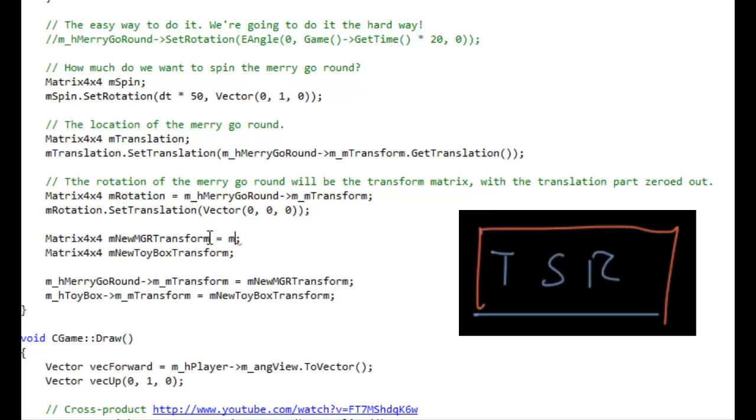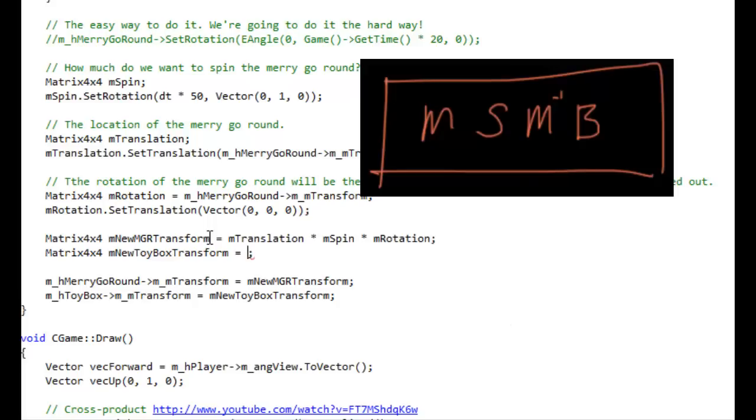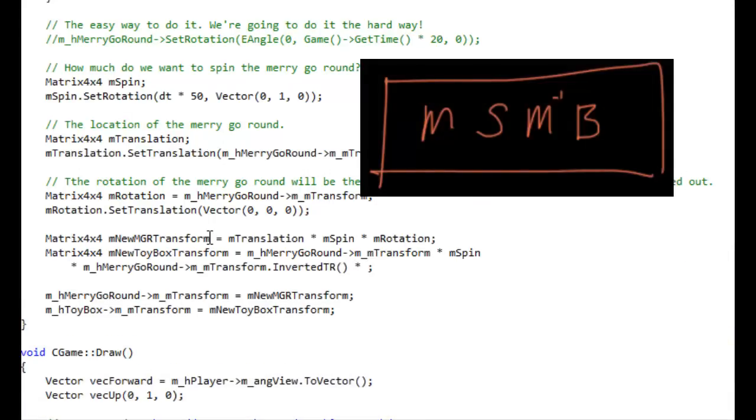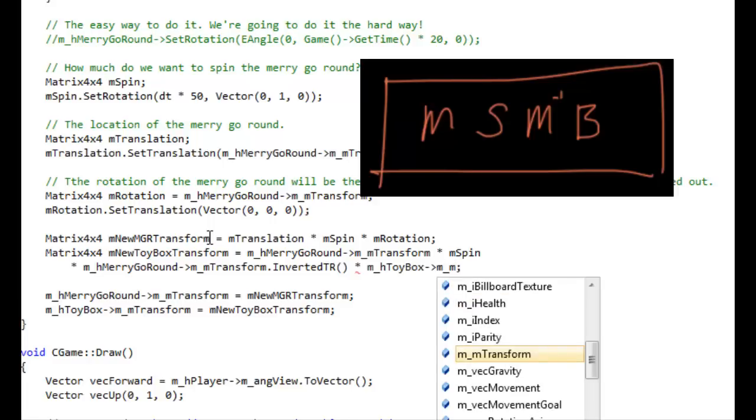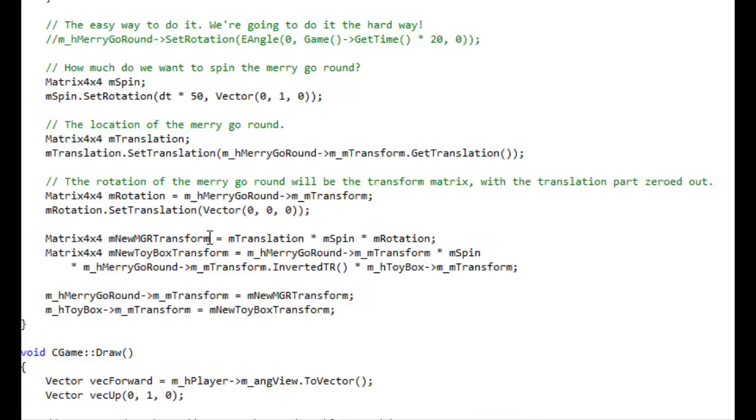It was for the merry-go-round. It was the translation times the spin times the rotation. And for the toy box, we have to grab the merry-go-round transform times the spin times the merry-go-round. Let's go to a new line so you guys can see. And then times the original transform.